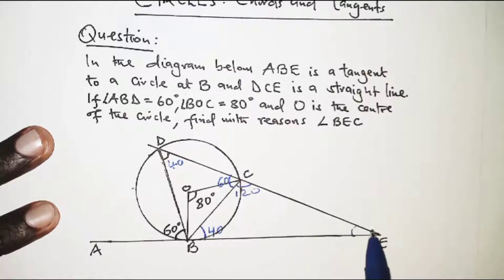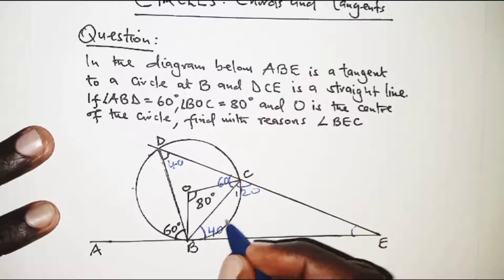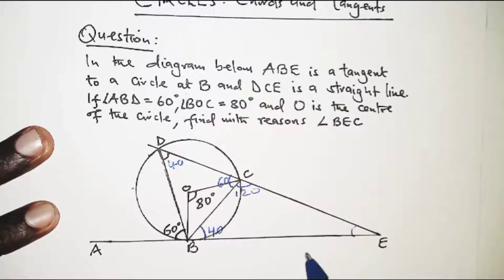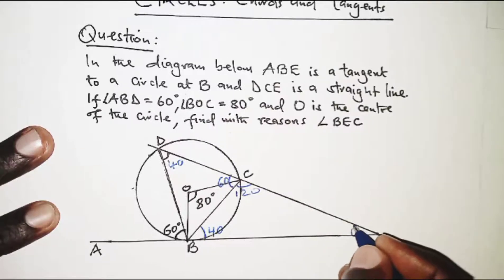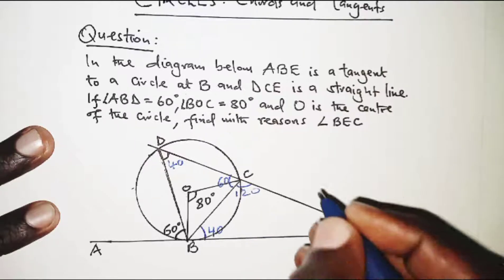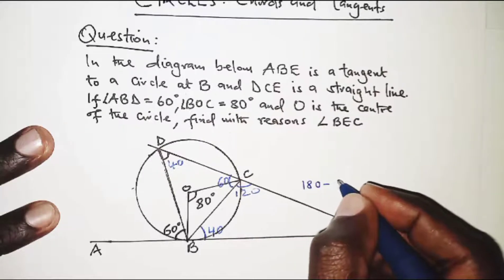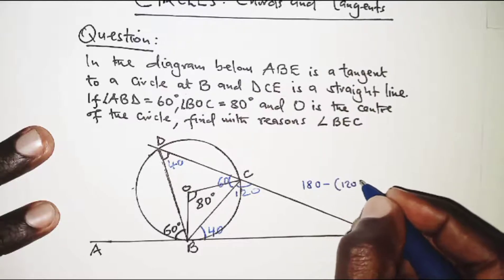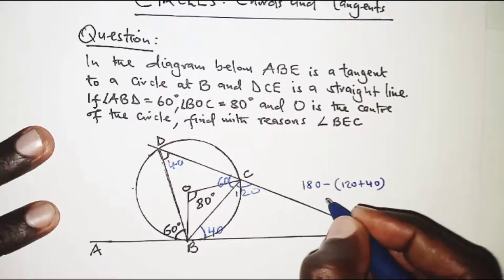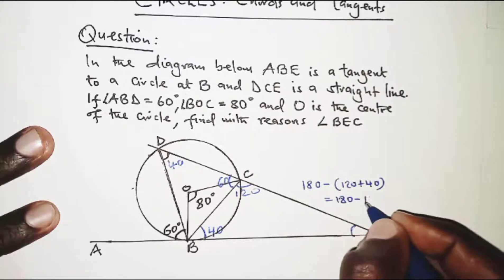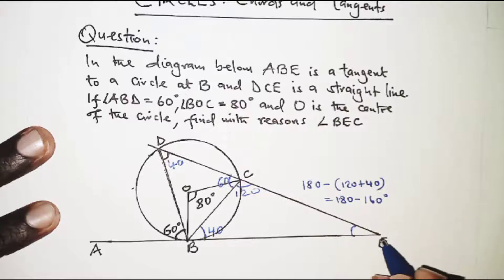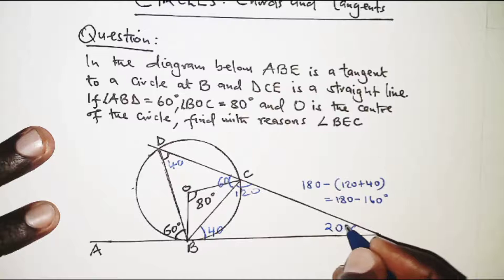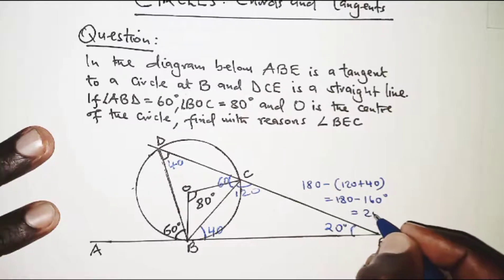At this particular point we can now get this angle right here. We have triangle BCE. For BCE, the angle property of a triangle is that the angle sum is 180. So we are going to have 180 minus 120 plus 40, which is 180 minus 160 degrees. So at point E we have 20 degrees.